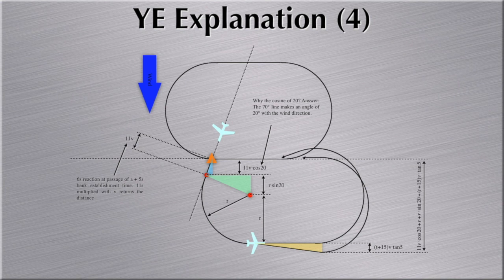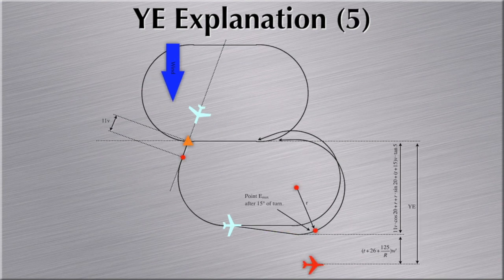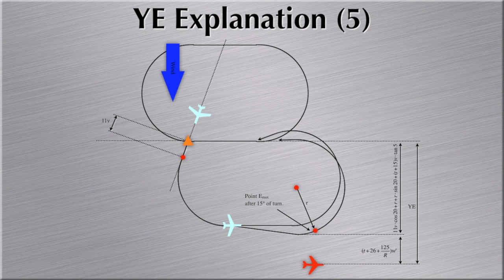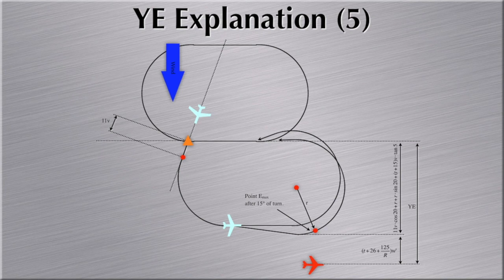The wind exposure time is calculated along the geometrically flown pattern plus an additional 15 degrees of turn to account for possible drift. The aircraft takes 6 seconds reaction time overhead the fix, 5 seconds for bank establishment, then time through 110 degrees of turn, then nominal outbound timing plus 10 seconds late timing, plus 5 seconds to establish the bank for the inbound turn, plus time for the additional 15 degrees. In total we again have 26 seconds over nominal timing plus a total of 125 degrees of turn.